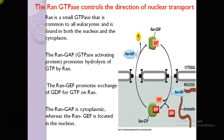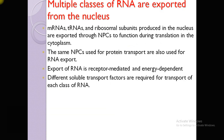Ran is a small GTPase common to all eukaryotes and is found in both the nucleus and cytoplasm. RanGAP, present in the cytosol, contains GTPase activity that promotes hydrolysis of GTP by Ran. RanGEF, present in the nucleus — also known as Guanine Nucleotide Exchange Factor — promotes exchange of GDP for GTP.